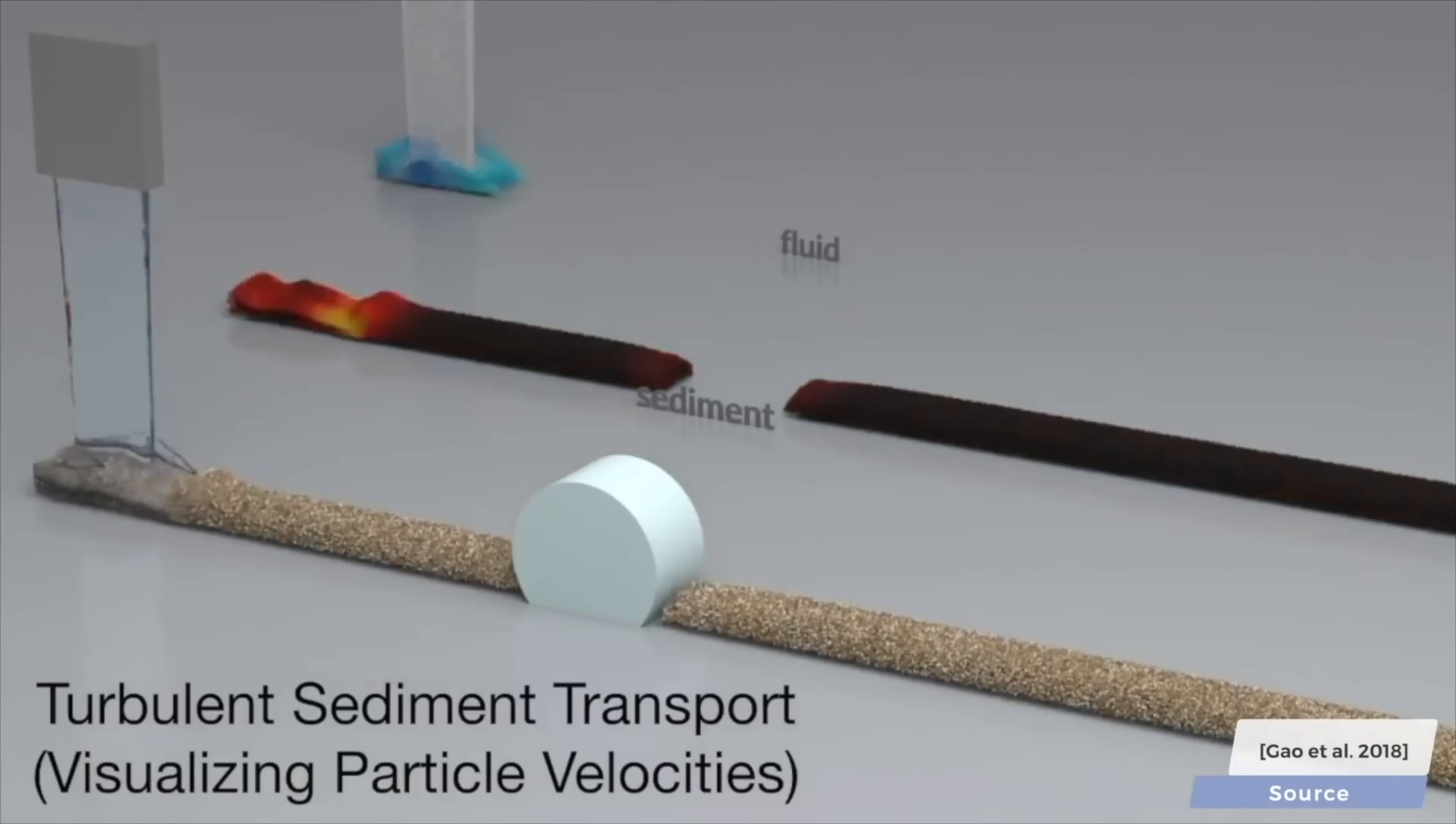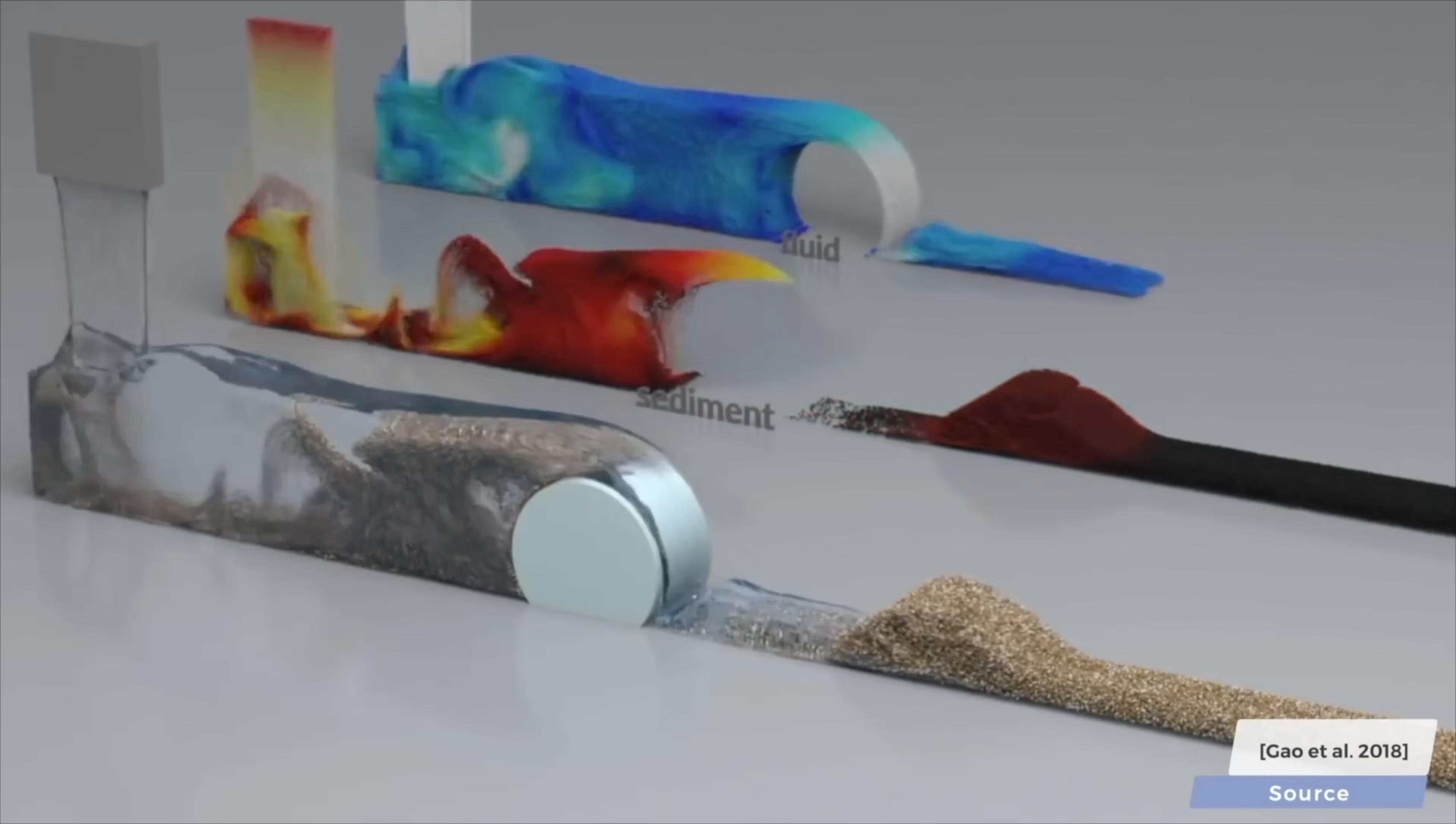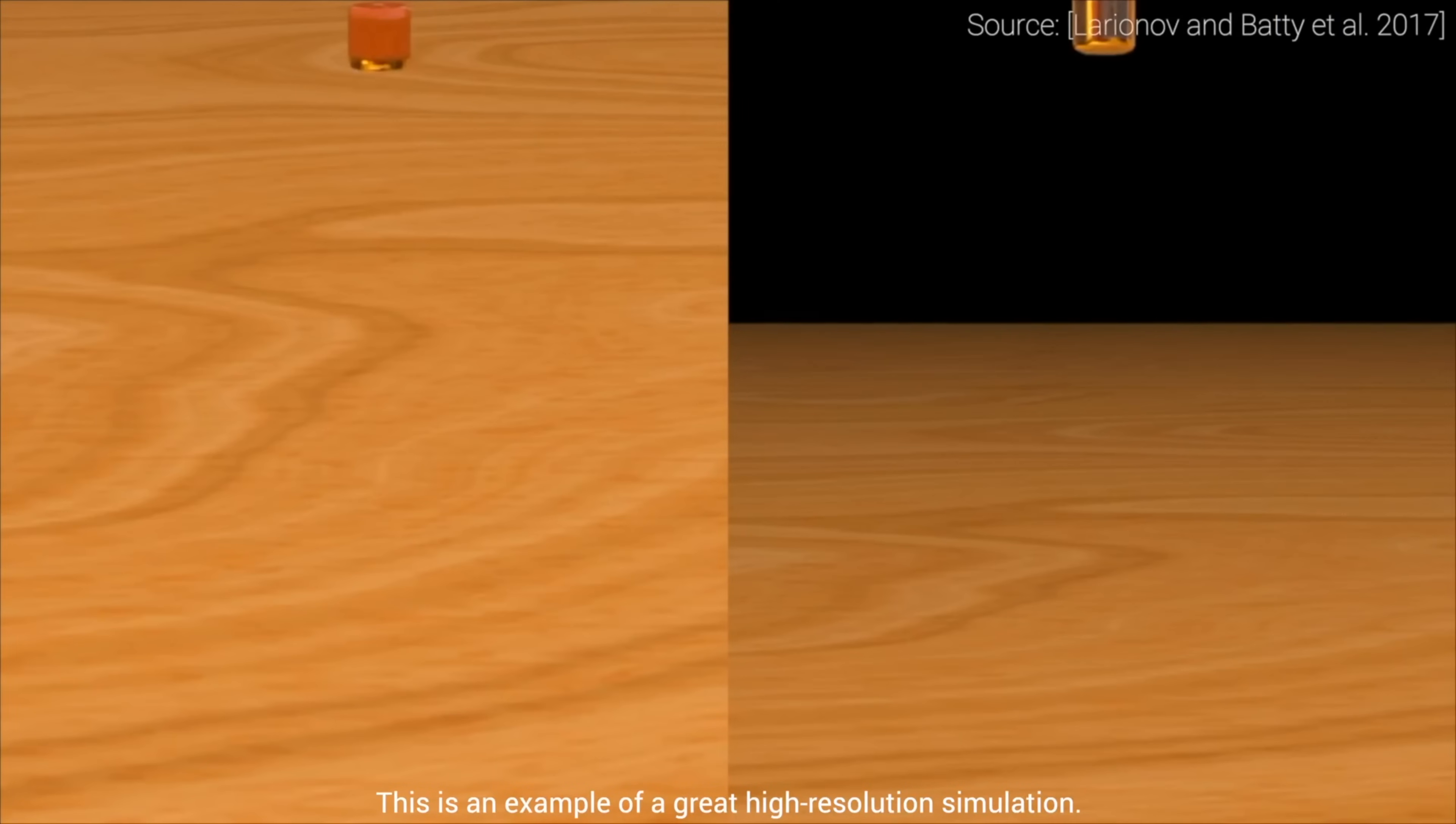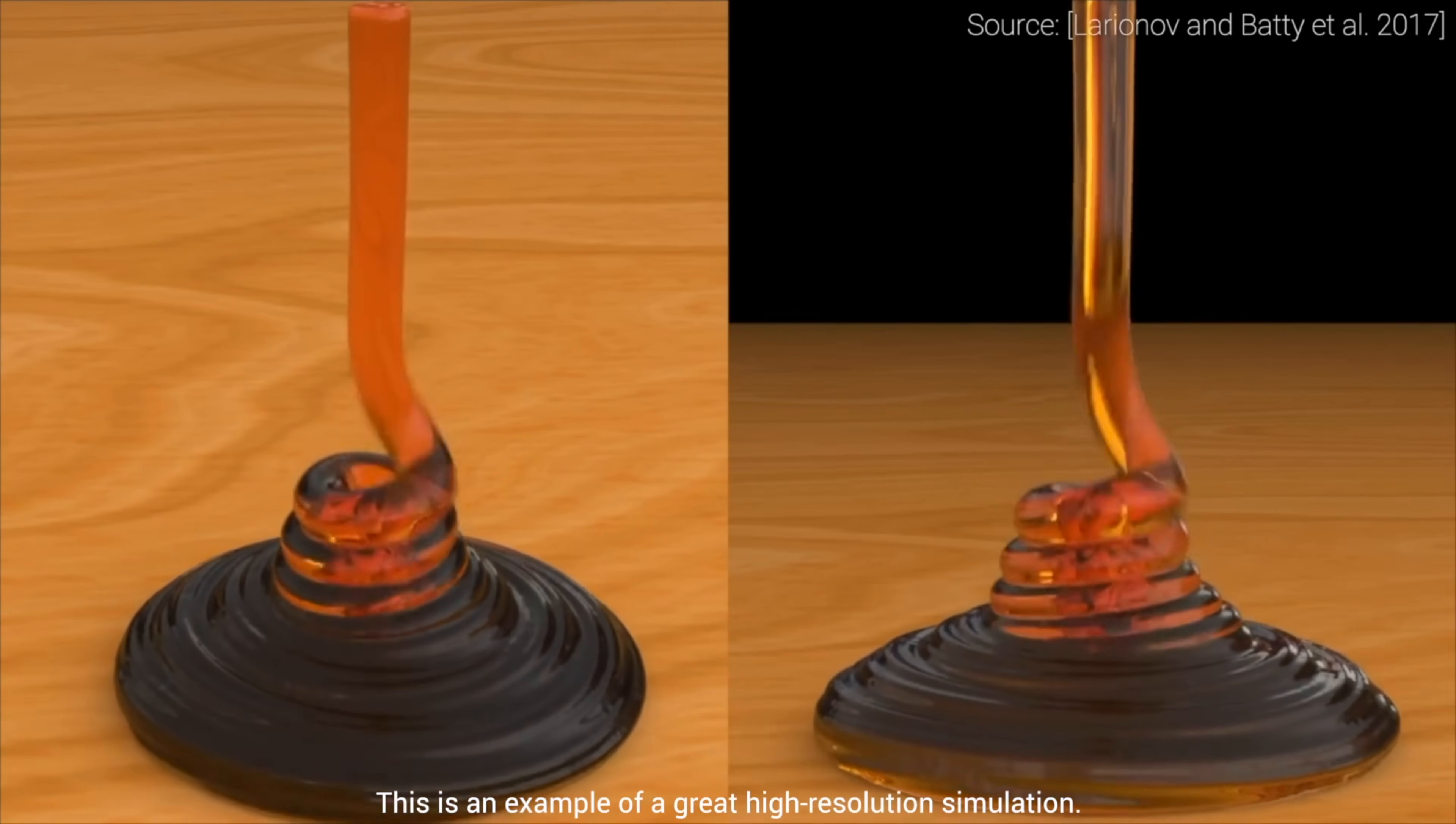We can create wondrous fluid simulations like the ones you see here by studying the laws of fluid motion from physics, and write a computer program that contains these laws. As you see, the amount of detail we can simulate with these programs is nothing short of amazing. However, I just mentioned neural networks. If we can write a simulator that runs the laws of physics to create these programs, why would we need learning-based algorithms?